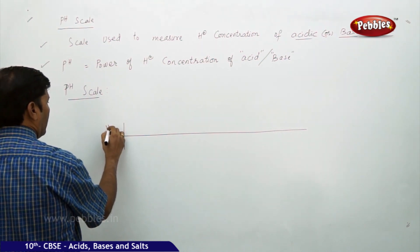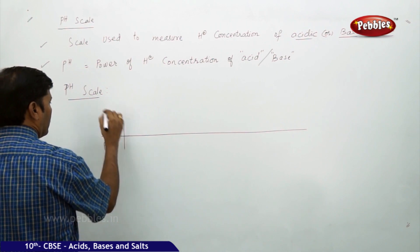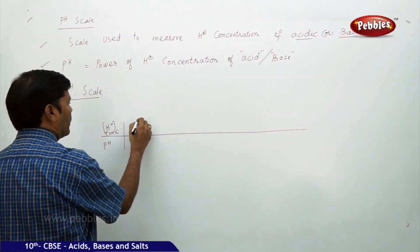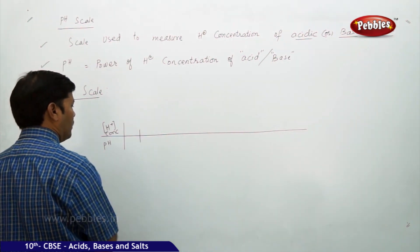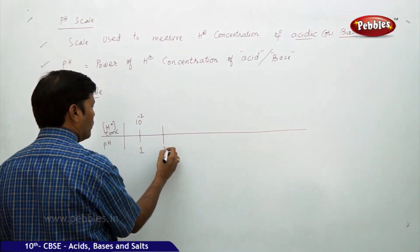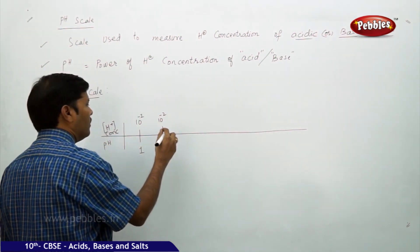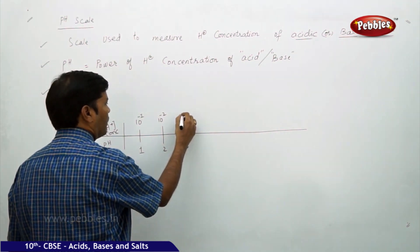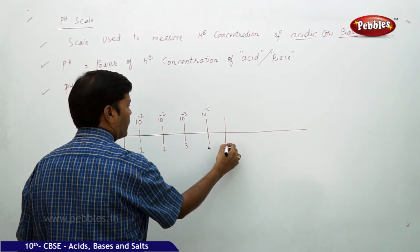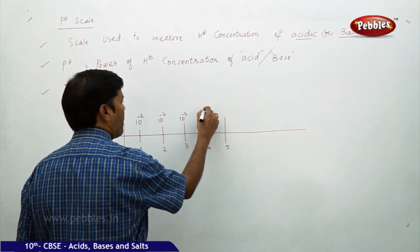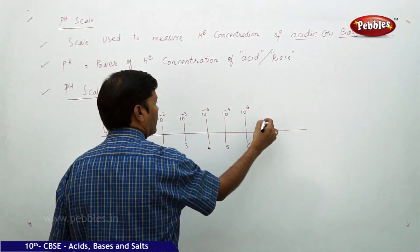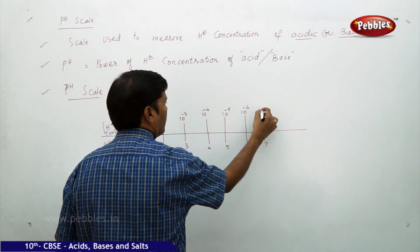Taking the pH and H+ ion concentration together: pH 1 corresponds to 10 to the power of minus 1; pH 2 is 10 to the power of minus 2 moles per liter; pH 3 is 10 to the power of minus 3; pH 4 is 10 to the power of minus 4; pH 5 is 10 to the power of minus 5; pH 6 is 10 to the power of minus 6; and pH 7 is 10 to the power of minus 7.